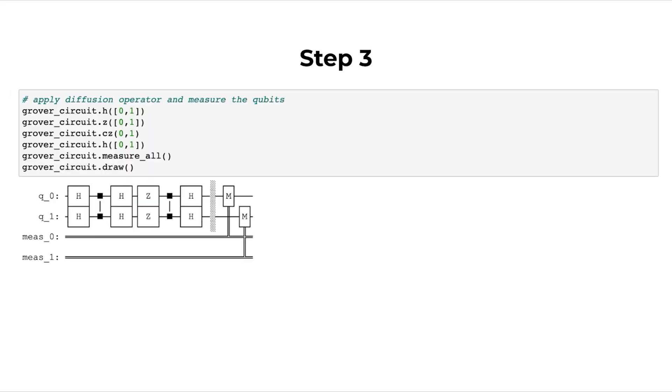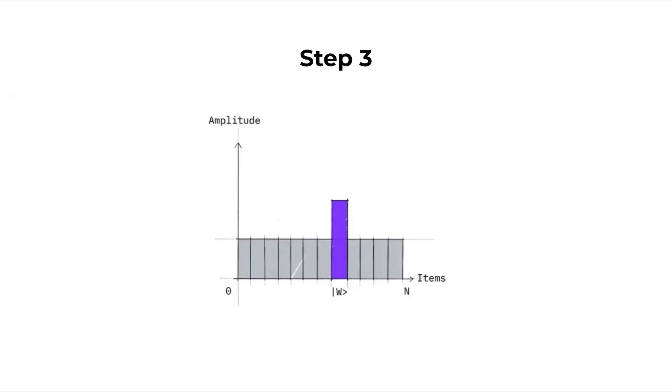The final step includes applying a transformation that's known as a diffusion operator. In the code, we apply a Hadamard gate, a Pauli Z gate, a controlled Z gate, and we finally return back to applying Hadamard gate once again. Basically, what this does is it reverses the previous transformation after the winning state was marked and it also triples the original amplitude of the winning value. So now we've got the average amplitude lowered with the winning state at a much higher amplitude value, which means that it increases the winning state's probability and decreases the rest.